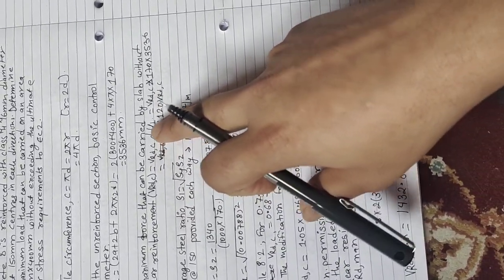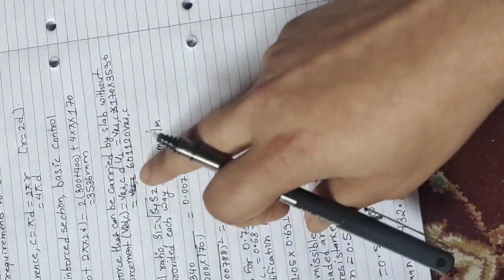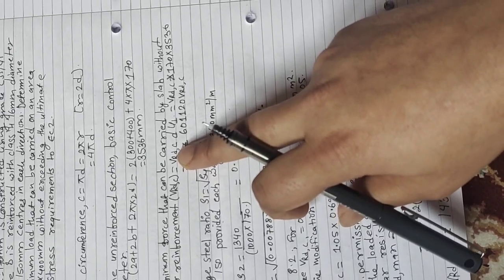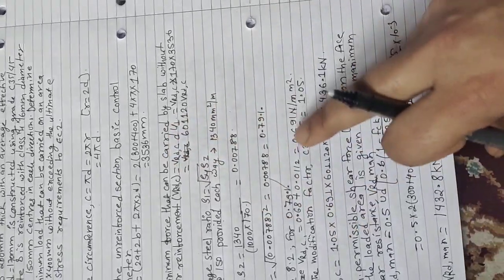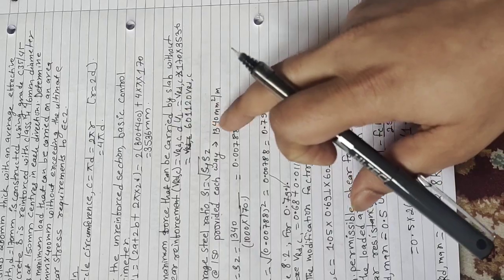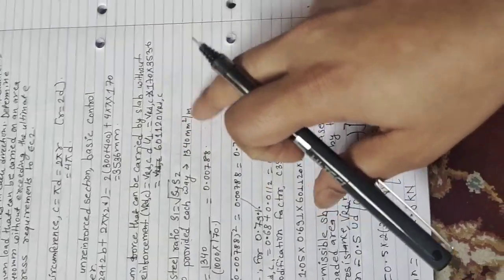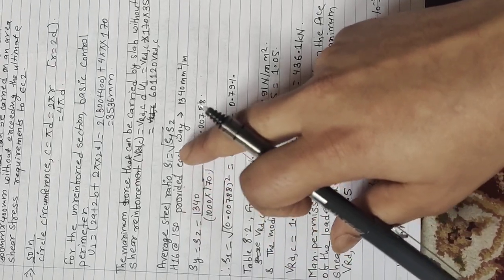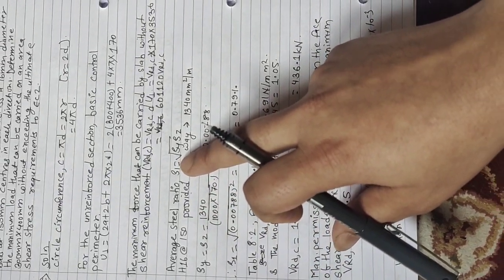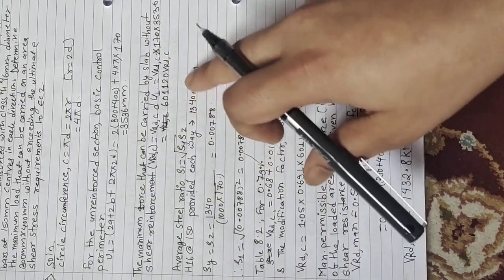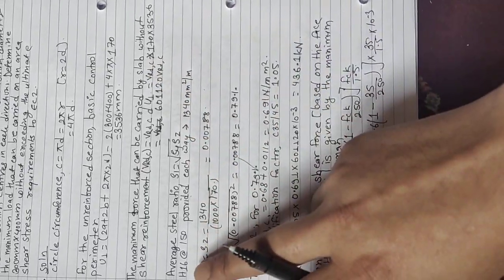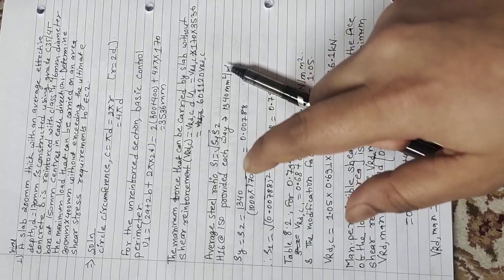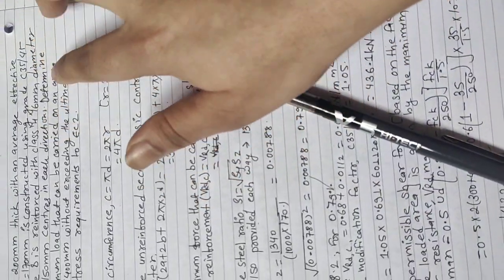For P_Rdc, which is the shear resistance of slab without shear reinforcement, we will see in the graph. First, we will calculate the average steel ratio. The average steel ratio is equal to δ1 = δy into δx. In y direction, z direction, we have 16 at the rate 150 mm provided in each way.